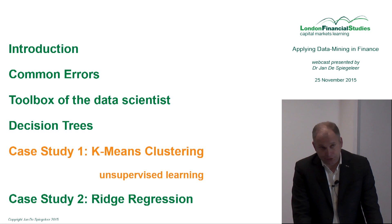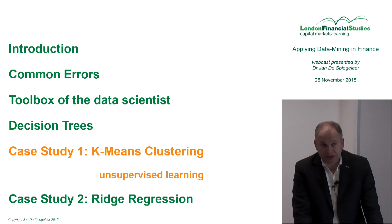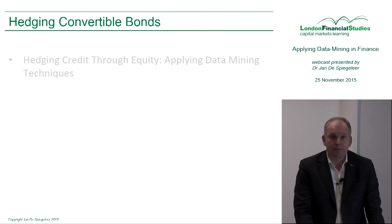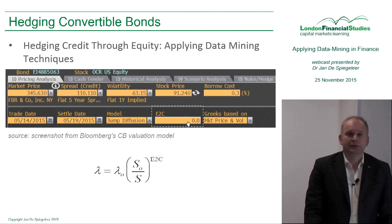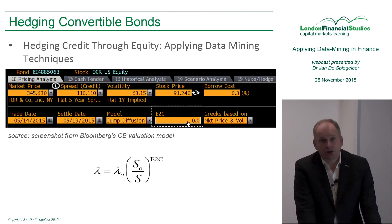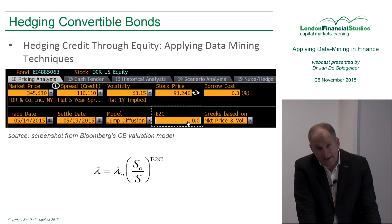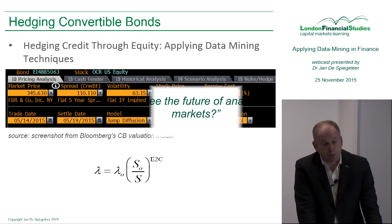Two case studies to finalize this introduction into data mining and finance. The first example is k-means clustering, and I take an example from my favorite asset class: convertible bonds. Convertible bonds are a very complex instrument — they have to be priced theoretically with a multi-factor model.